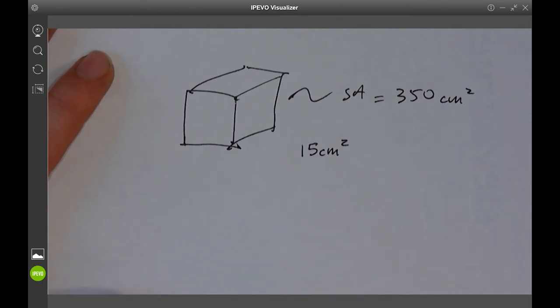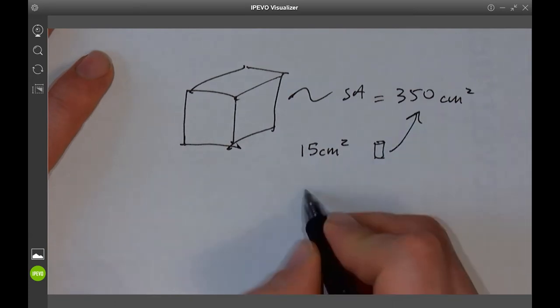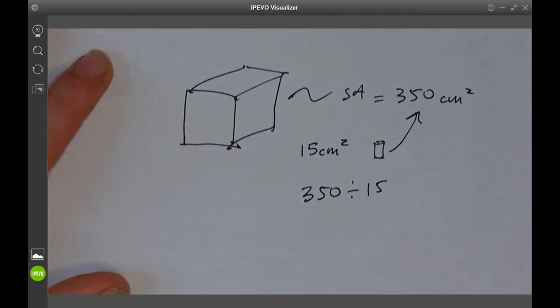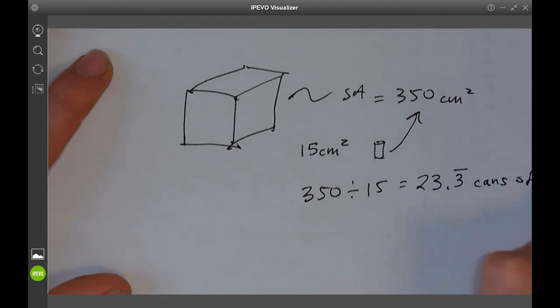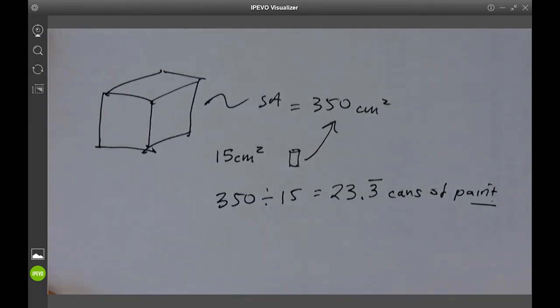In this case, well all I would do is I would say one little can of paint, tiny little paintbrush, whatever paint stroke, little tiny thing of paintbrush or paint can, only covers this much. How much am I gonna need? Well we'll just divide them, the big number divided by the little number, and I am going to get approximately 23.3 repeated cans of paint.